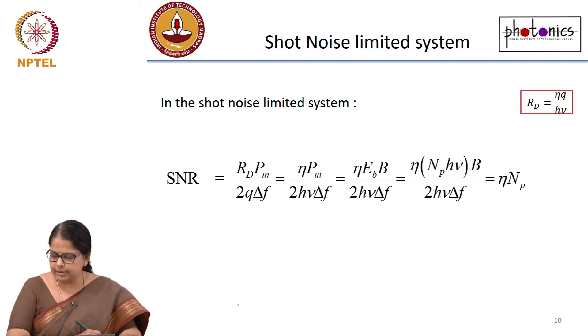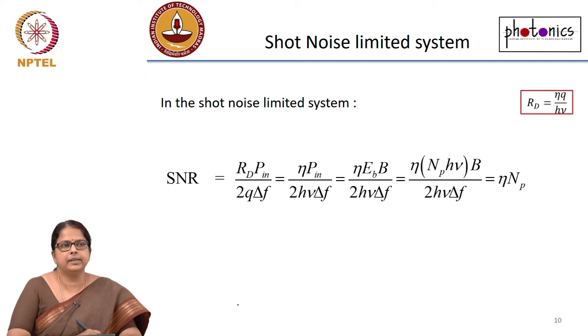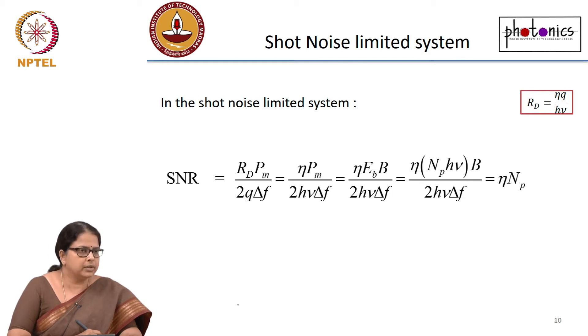If you have a shot-noise-limited system, we derived that the SNR equals eta times N_P — where eta is the quantum efficiency and N_P is the number of photons. That is where we stopped previously.